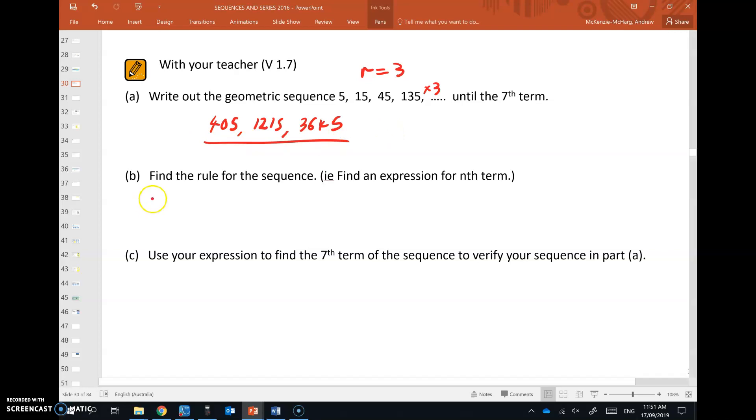Okay, rule for the sequence. So in general we have this. So what is the first term in our sequence? There it is, it's 5. And we already determined that the common ratio is equal to 3. So we just write that out with the a value and the r value in there. And there we are, we're done.